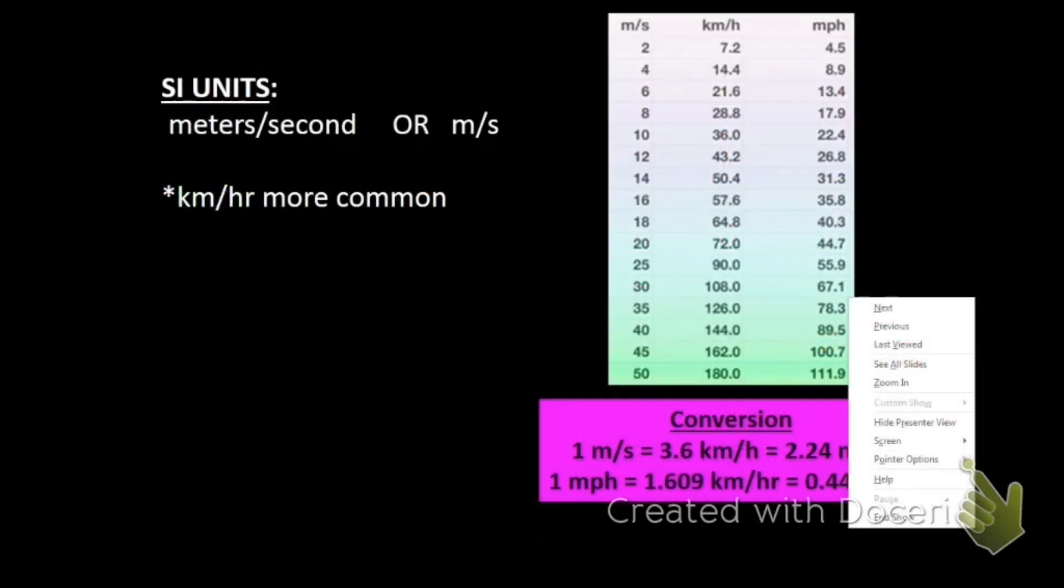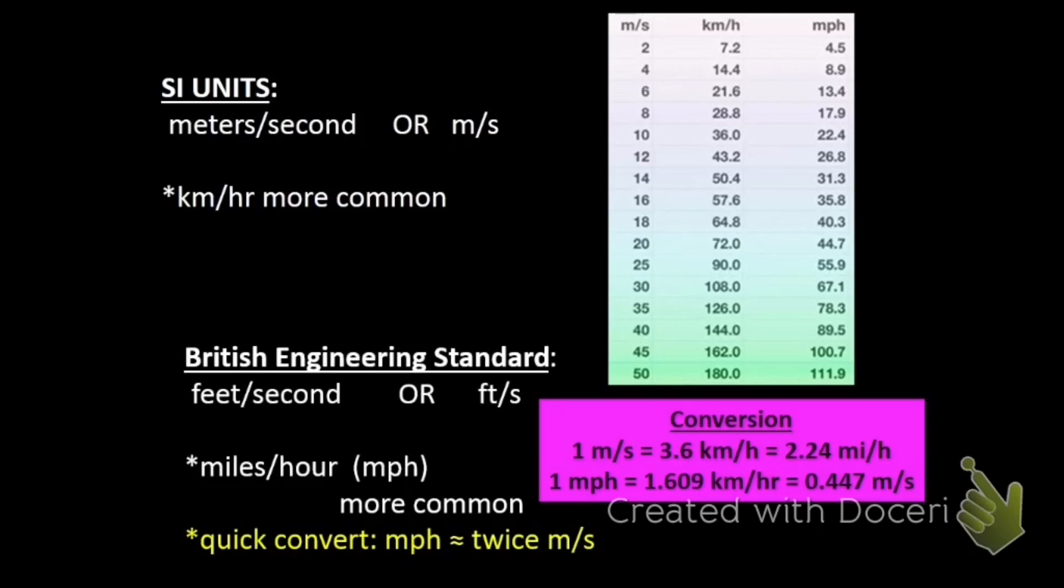Let's talk about some different units for speed. The SI units are meters per second, abbreviated m/s. Kilometers per hour is another metric set of units that we're going to be using a lot. In the English system, feet per second is the standard, but we also use, of course, miles per hour.